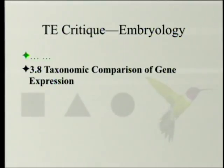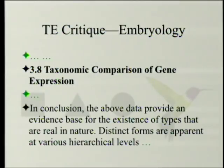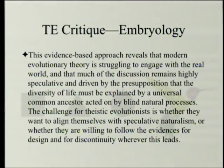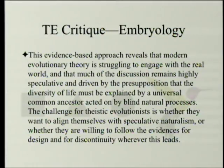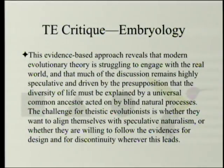In conclusion, the above data provide an evidence base for the existence of types that are real in nature. Distinct forms are apparent at various hierarchical levels. This evidence-based approach reveals that modern evolutionary theory is struggling to engage with the real world, and that much of the discussion remains highly speculative, driven by the presupposition that the diversity of life must be explained by a universal common ancestor acted on by blind natural processes. The challenge for theistic evolutionists is whether they want to align themselves with speculative naturalism, or whether they are willing to follow the evidence for design and for discontinuity, wherever this leads.